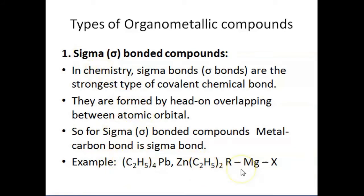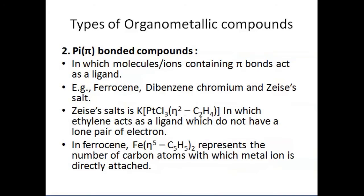The second type is pi bonded compounds, in which molecules or ions containing a pi bond will act as a ligand. For example, we can take ferrocene or dibenzene chromium — salts in which ethylene acts as a ligand and which do not have a lone pair of electrons.